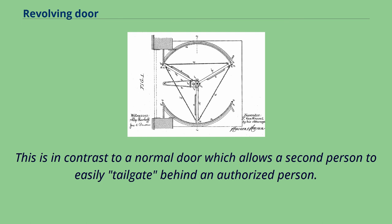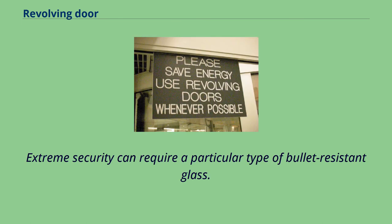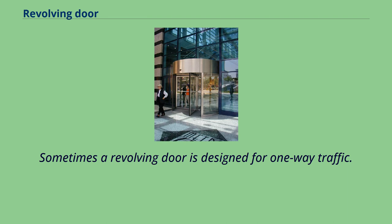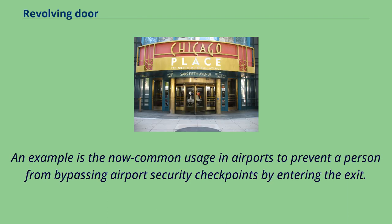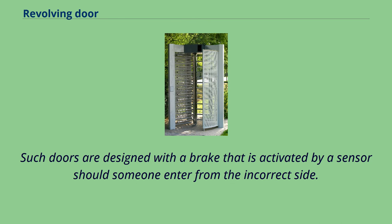This is in contrast to a normal door, which allows a second person to easily tailgate behind an authorized person. Extreme security can require a particular type of bullet-resistant glass. Sometimes a revolving door is designed for one-way traffic — an example is the now common usage in airports to prevent a person from bypassing airport security checkpoints by entering the exit.